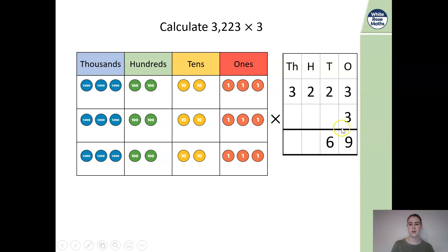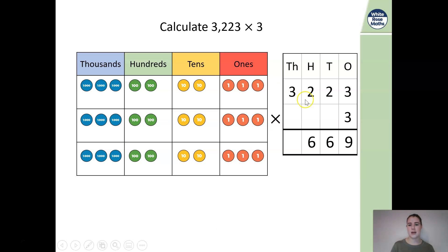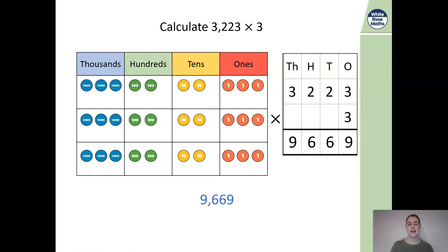For the 100s, we're doing 200 multiplied by 3: counting those — 2, 4, 6. We have 6 lots of our hundreds. Then multiplying our thousands: 3 by 3, counting — 3, 6, 9. We have 9 lots of our thousands. So our answer is 9,669.